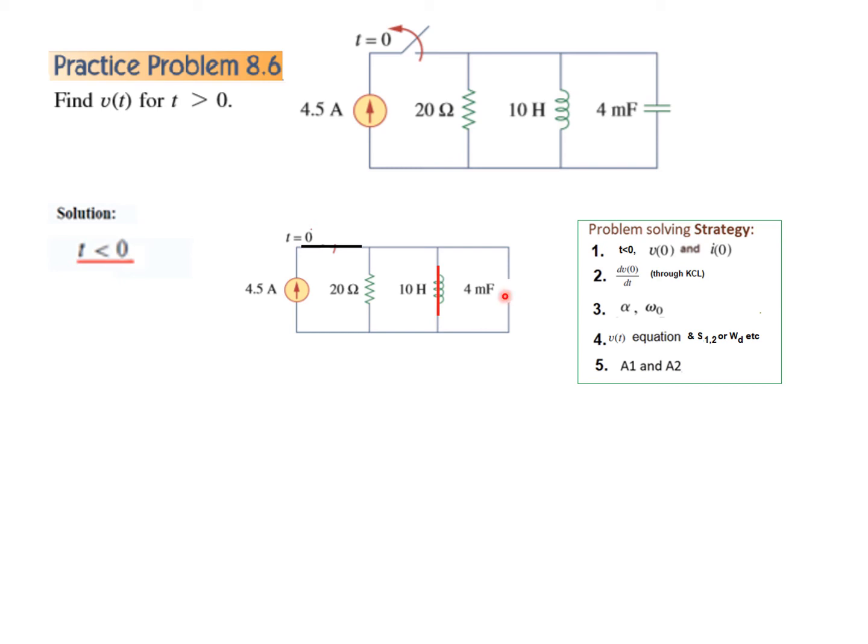Since this is in parallel with this, voltage drop in this will be 0 because there is no resistive element here. So I into 0 is 0. Or you can also look here. Since there is no current flowing in this resistance, current is 0, so the voltage drop here will also be 0. So the voltage V0, voltage drop across capacitor will be 0. So I0 is 4.5 ampere and V0 is 0 volt. So that is the first step.